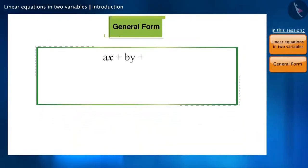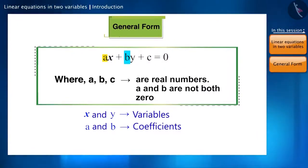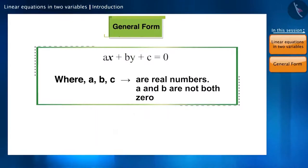Generally, we write it in the form of ax plus by plus c is equal to 0. Here, x and y are the variables. a is the coefficient of x, b is the coefficient of y, and c is the constant. Friends, an important point here is that a, b, and c are real numbers. And both a and b cannot simultaneously be 0.